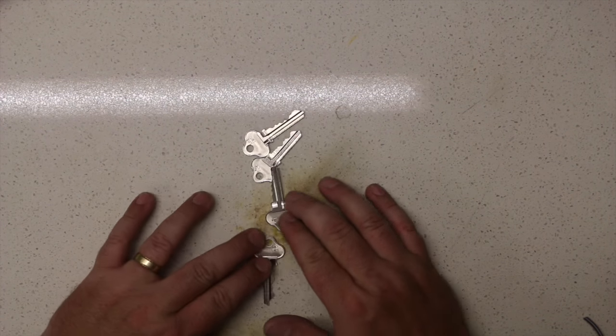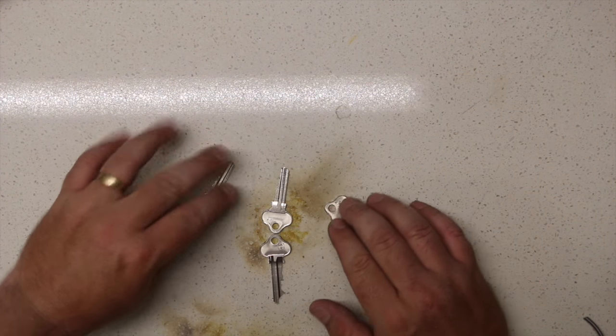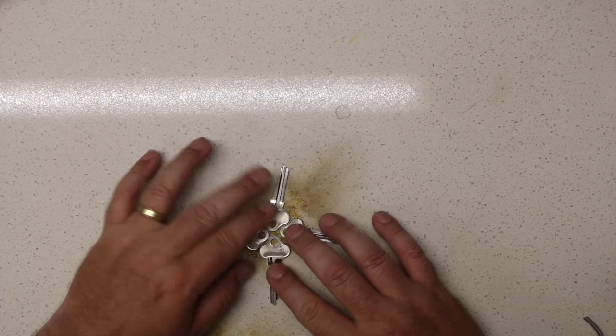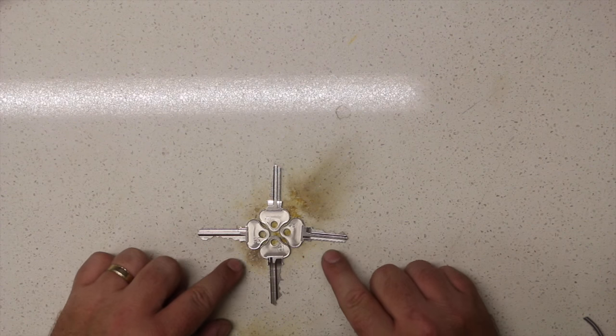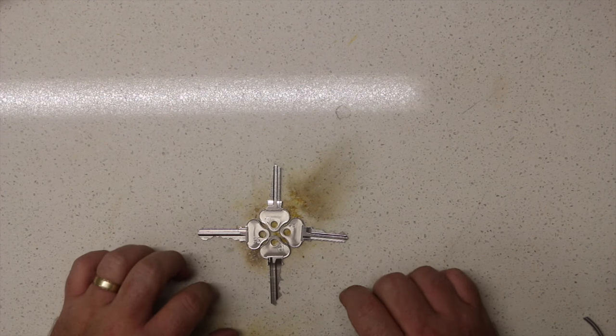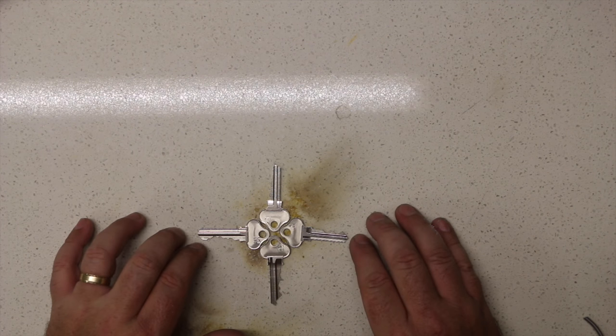I've got my four keys here and I'm just going to arrange them in a basic cross pattern. If you want, you can grab yourself a little bit of CA glue and just drop them down here just to keep them to the workbench because they can move around a little bit.